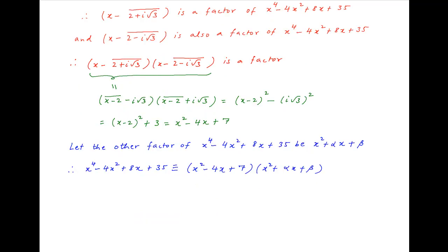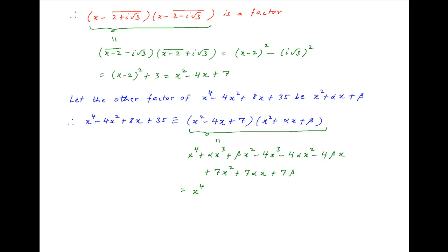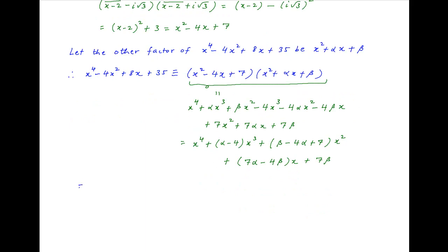Expanding the right-hand side gives x⁴ + (α - 4)x³ + (β - 4α + 7)x² + (7α - 4β)x + 7β. Comparing the coefficients of like terms across the left-hand side and the right-hand side, we can now equate each coefficient.